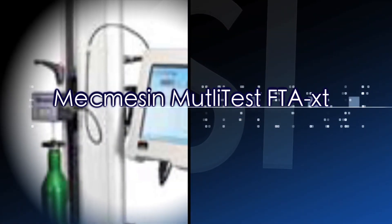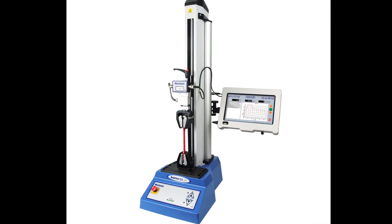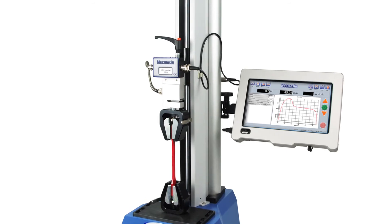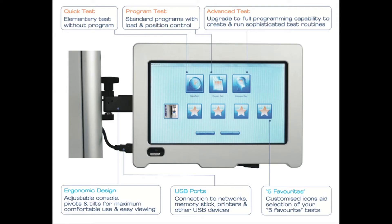For production control, the Mecmesin FTA XT has been developed. This food texture analyzer is fitted with a touchscreen tablet PC. Operation of the Multitest XT is simple, using the touchscreen interface with one-touch favorite test program selection and quick changeover to different size containers making rapid testing easy.